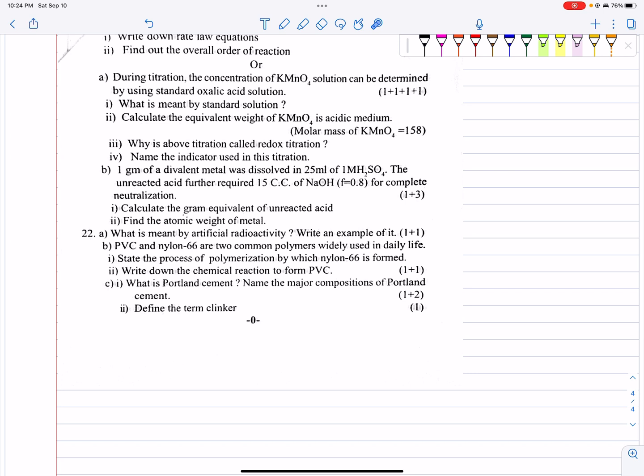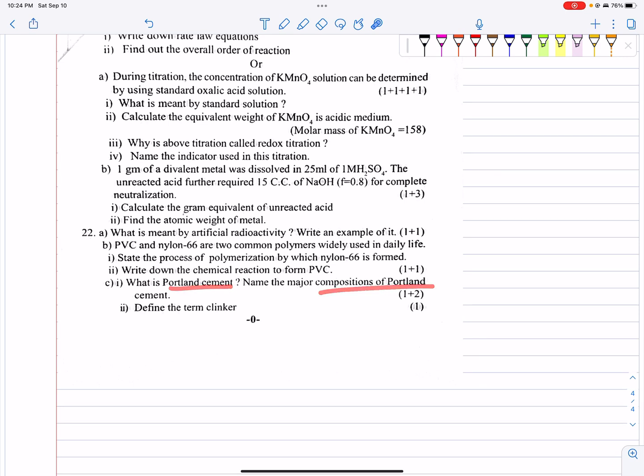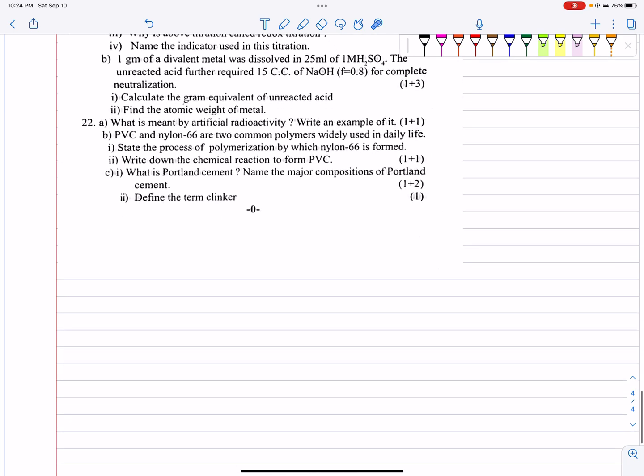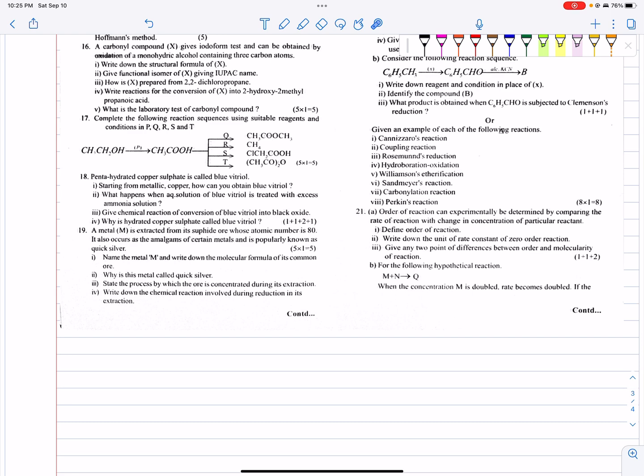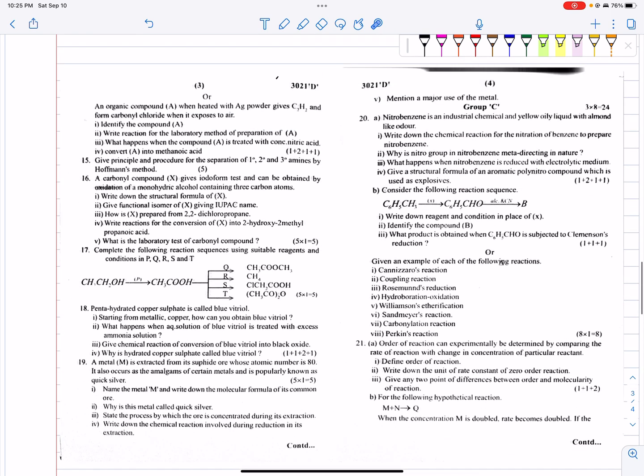What is meant by artificial radioactivity and write an example? PVC and Nylon 6, Nylon 66 are two common polymers widely used in daily life. State the polymerization process by which Nylon 66 is formed and the chemical reaction. What is cement composition and what is clinker? Simple questions. Practice these questions and important question solutions.